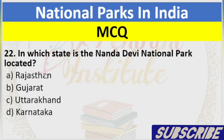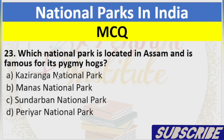Question 22: In which state is the Nanda Devi National Park located? A. Rajasthan, B. Gujarat, C. Uttarakhand, D. Karnataka. Answer: C. Uttarakhand.